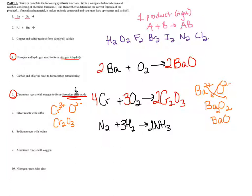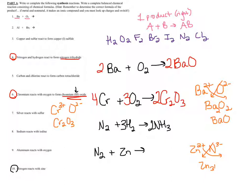Let's do one more synthesis example — number ten: nitrogen reacts with zinc. Nitrogen is diatomic, so N₂; zinc is not diatomic, so Zn. This is a non-metal reacting with a metal, so again we get an ionic compound. Even though nitrogen was written first, in the ionic compound the metal goes first. Zinc has a 2+ charge; nitrogen has a 3− charge. Switching gives Zn₃N₂. I write that into the equation and then balance.